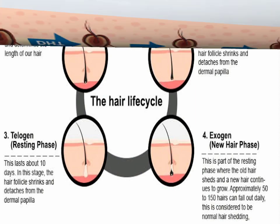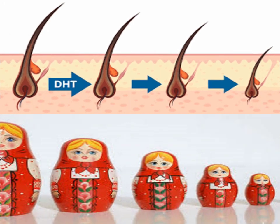To understand baldness, you have to understand the process called miniaturization. Miniaturization can be understood with this simple diagram. Here you can see a decrease in the diameter of the root and also a decrease in the length. The cause of decrease in diameter is the effect of the dihydrotestosterone hormone. The cells dividing in this region have decreased, and the reason for the decrease in the length of the hair follicle is a decrease in the anagen phase.